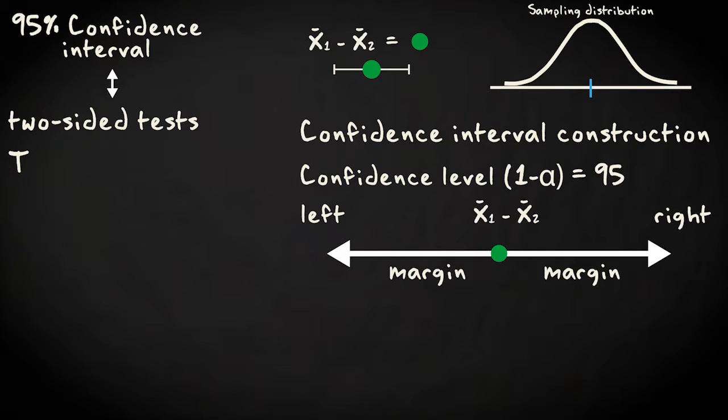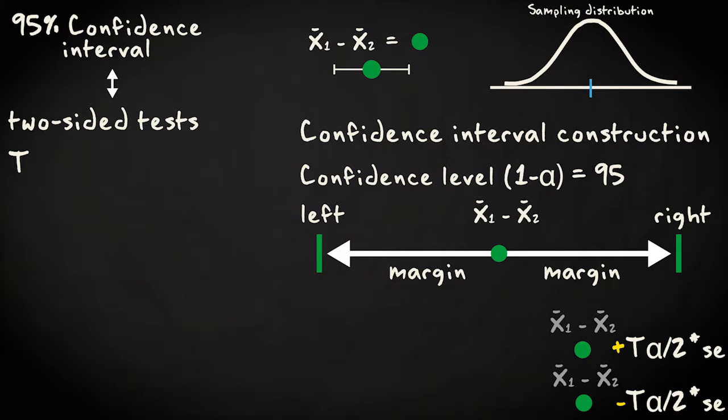The boundaries are given by the sample statistic minus the test statistic value associated with the left half of alpha times the standard error, and the sample statistic plus the test statistic value associated with the right half of alpha times the standard error.